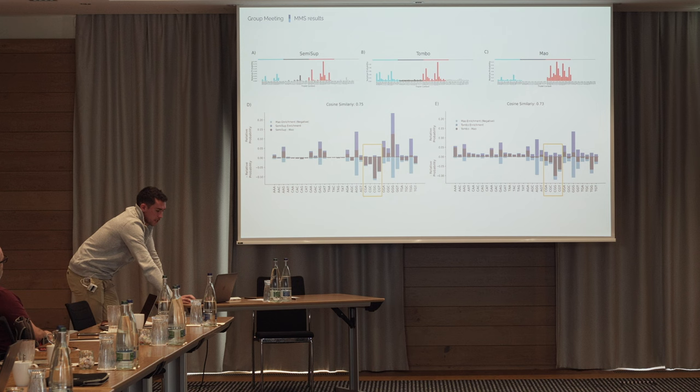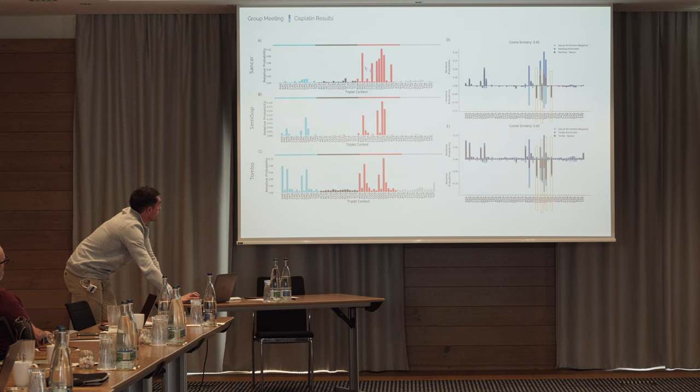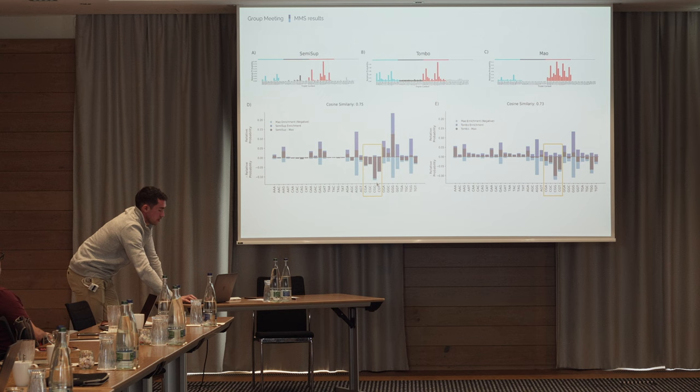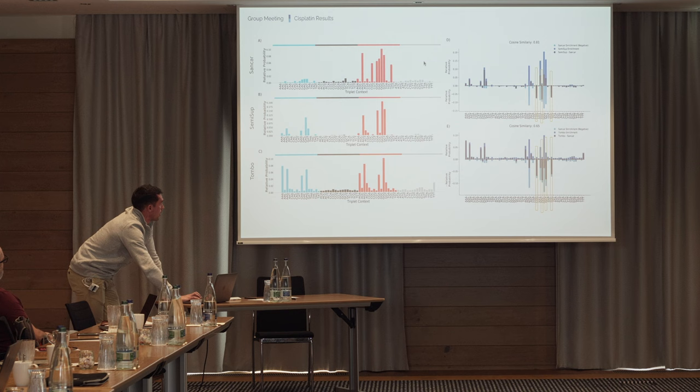We then looked at cosine similarities to see how close those profiles are to the ground truth, and kept looking at the cisplatin case. Here we have the ground truth, which is Sankar, alongside SemiSoup and Tombow with more or less the same plot structure. However, Tombow's profile looks really similar to what we were showing with MMS, which caught our attention, as did the cosine similarities.